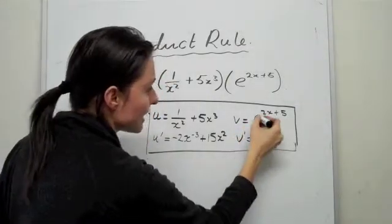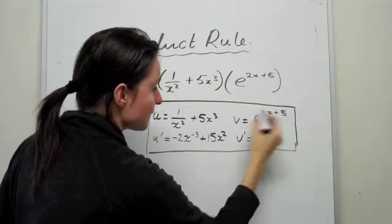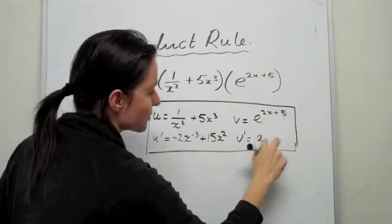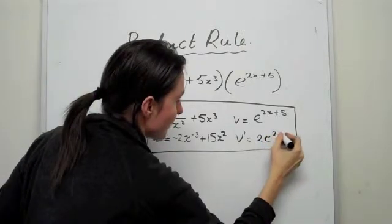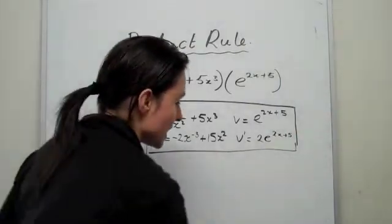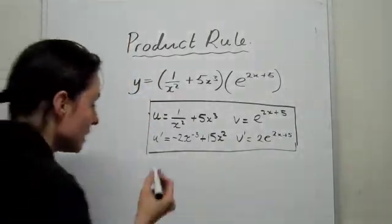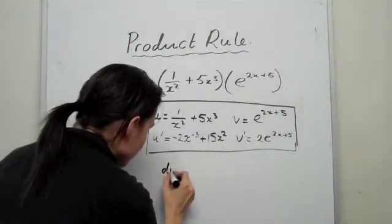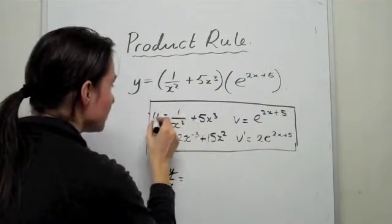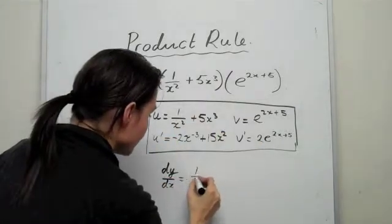And then we have V dash. To differentiate E's, you have to bring whatever you have here. You have to take the power down, differentiate it, and put it in front of your expression. So basically the derivative of 2X plus 5 is just 2. And then you do not decrease the power by 1. You just leave the power on the E. So we have this expression now set up. All right, so what we can do is we can plug that into our product rule formula. So our product rule formula says that DY over DX is equal to U times by V dash plus V times by U dash.